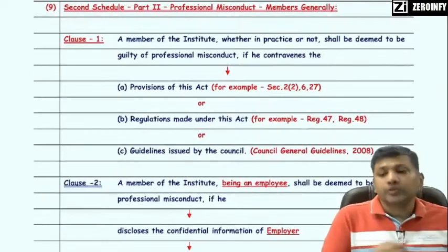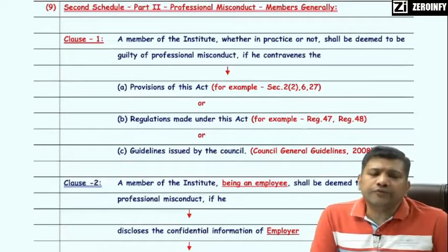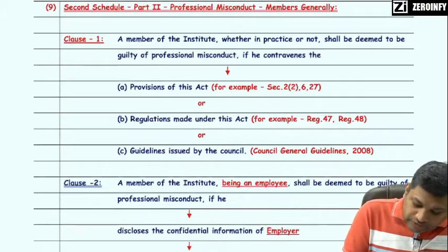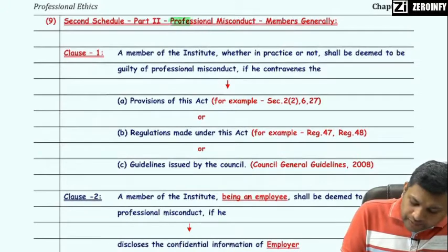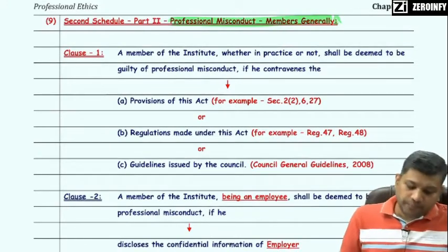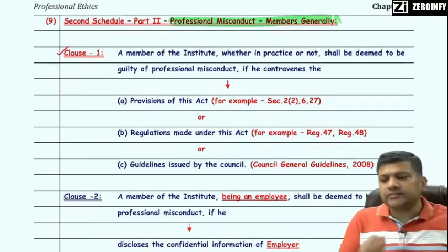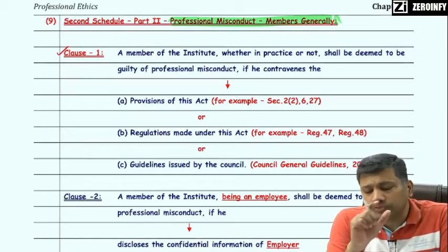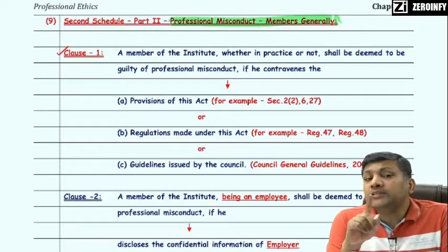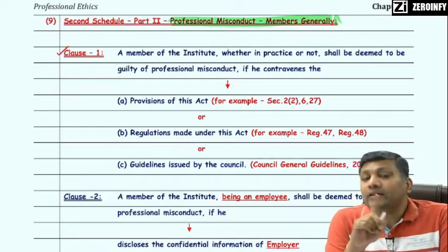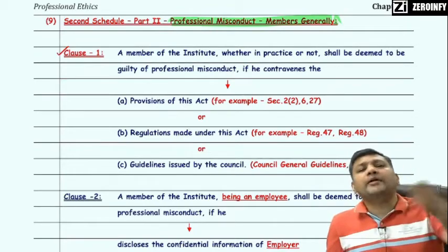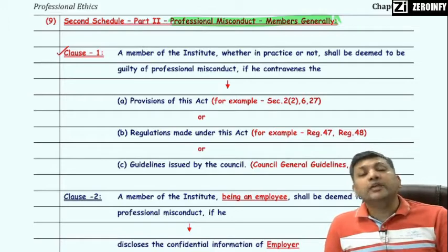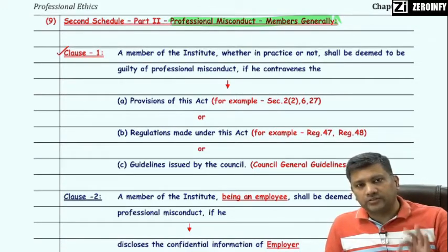Now moving to Second Schedule Part 2. Part 2 of Second Schedule deals with professional misconduct for members generally, comprising four clauses. Clause 1 states that a member of the institute, whether in practice or not, shall be deemed to be guilty of professional misconduct if he contravenes the provisions of this Act, the regulations made under this Act, or the guidelines issued by the Council of the Institute.